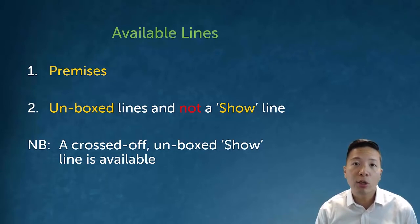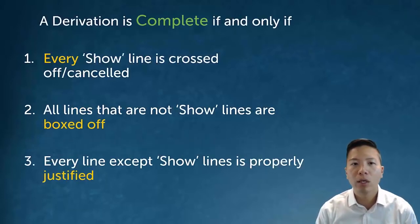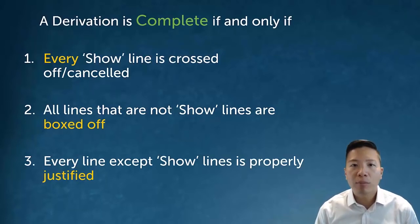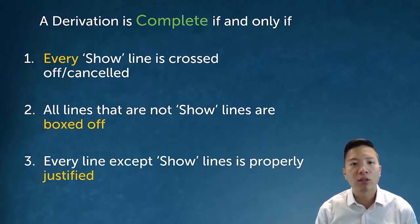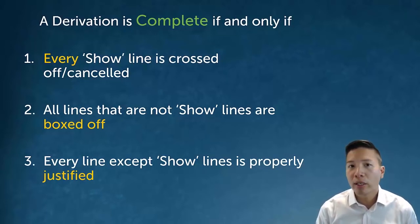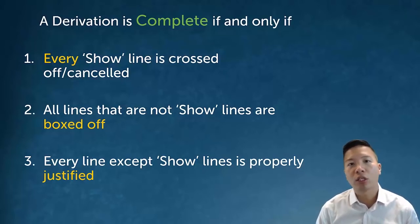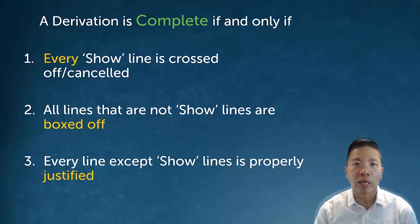If you ever successfully cross off a show line and it's not in a box, that line is actually good — the show isn't there and it's just a regular available unboxed line. A derivation is complete in a pretty mechanical way: every single show line is successfully crossed or cancelled, all lines that aren't show lines need to be in a box, and you must always have a justification for every line.